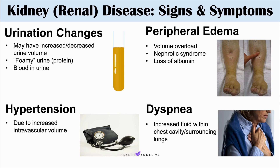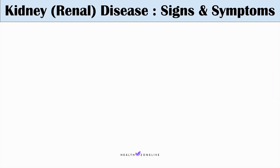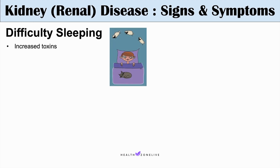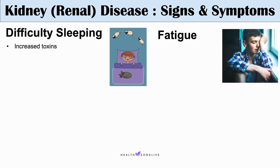Other signs and symptoms include difficulty sleeping due to increased toxins — individuals may have trouble falling asleep, issues during sleep, or feel very tired during the day. This leads into fatigue, another common symptom. Patients can be very fatigued throughout the day with a lot of daytime sleepiness. This is due to increased toxins, since the kidneys filter and excrete many toxins, and if not working properly, toxins accumulate. Fatigue can also be secondary to anemia, which we'll discuss next.